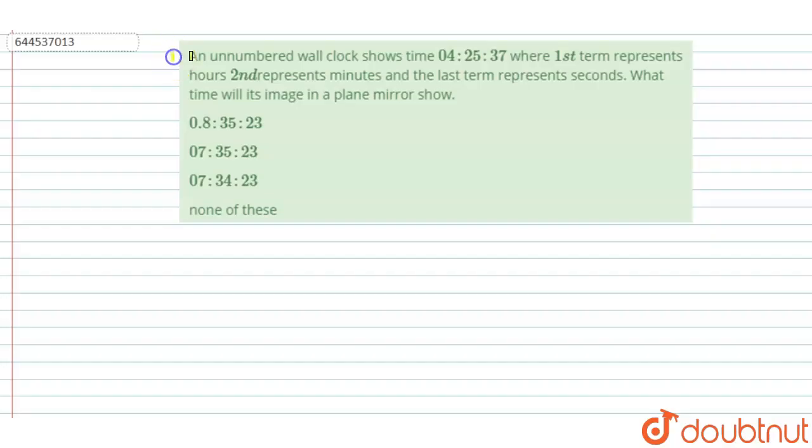Hello, welcome to Doubtnut. In this question given, an unnumbered wall clock shows time 4 hour 25 minute 37 second, where the first term represents the hour, second represents minute, and the last term represents second. Then what time will its image in the plane mirror show?